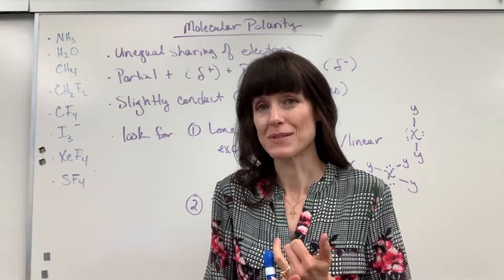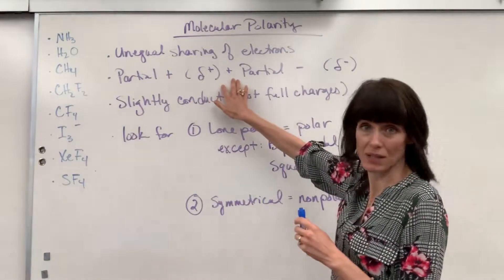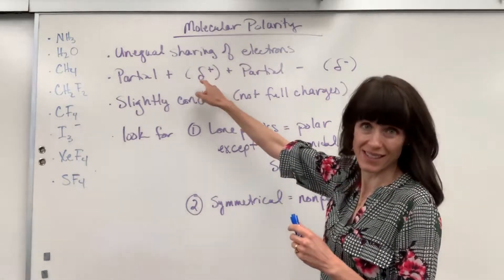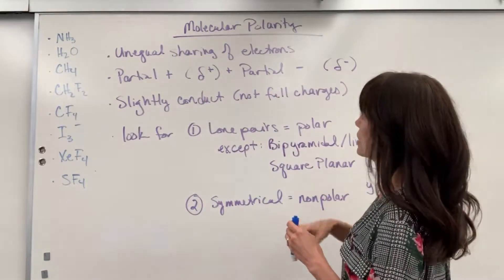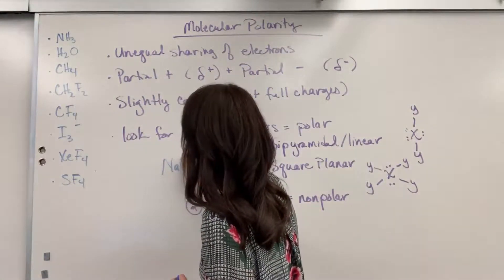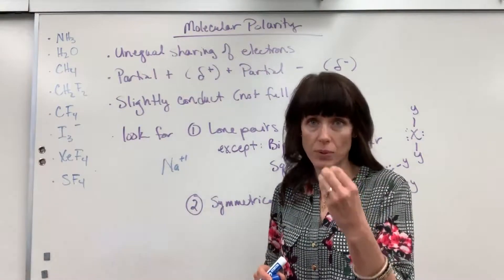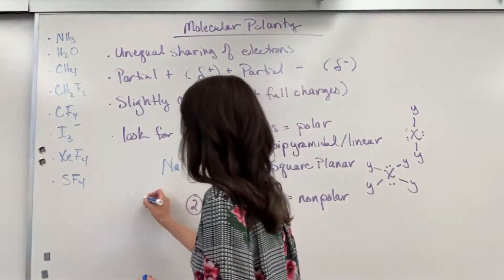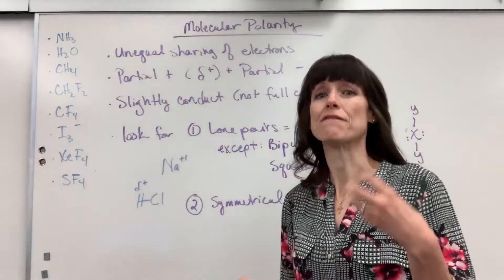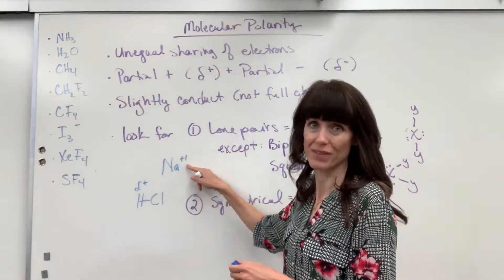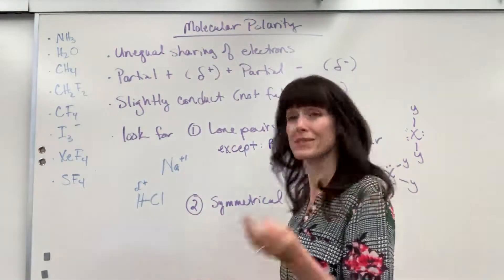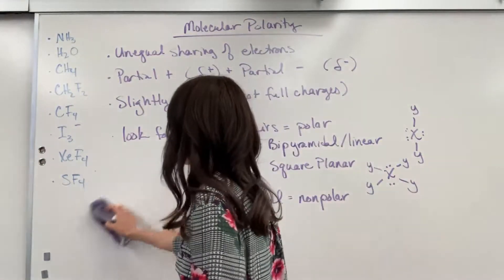Polar simply means that there's a partial positive and a partial negative — that's what I put up here. I'm using the lowercase delta from the Greek alphabet to represent partial positive and partial negative. These are not a full-on charge. For example, sodium has a complete one-plus charge. But for something like hydrochloric acid with a partial positive, that means it's only a fraction of that one-plus charge — a percentage that depends on the polarity of the molecule.